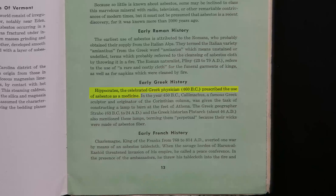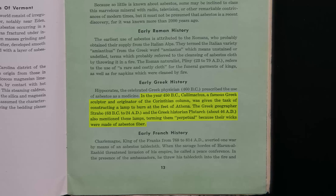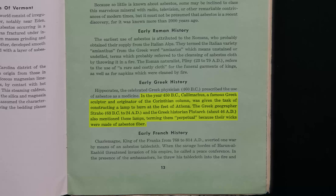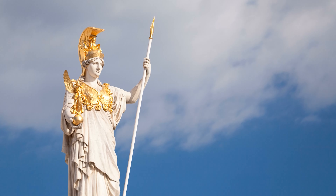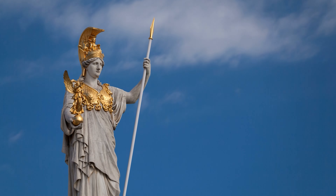Hippocrates, the celebrated Greek physician, prescribed the use of asbestos as a medicine. In 450 BC, Callimachus — a famous Greek sculptor and originator of the Corinthian column — was given the task of constructing a lamp to burn at the feet of Athena. The Greek geographer Strabo and historian Plutarch also mentioned these lamps, terming them perpetual because their wicks were made of asbestos fibers. Pausanias stated that the Acropolis in Athens had a great bronze statue of Athena and a gold lamp with a wick that was always lit.